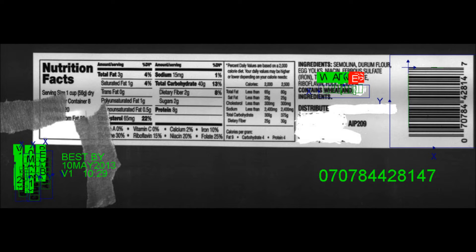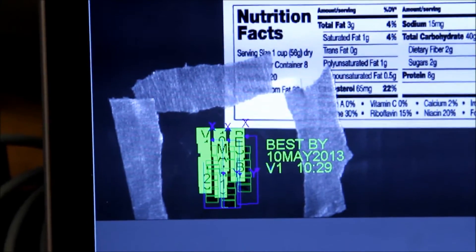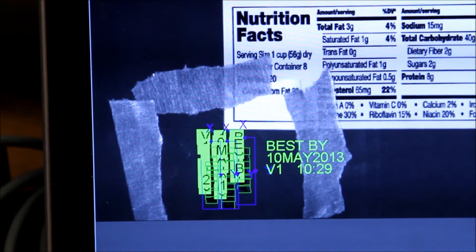This line scan camera is able to inspect the barcode, allergen information of wheat and egg, and the expiration day lock code on the other side of the label for presence and accuracy.